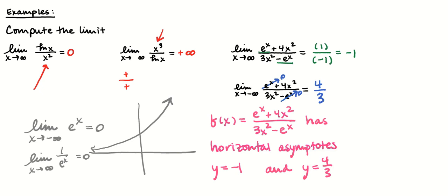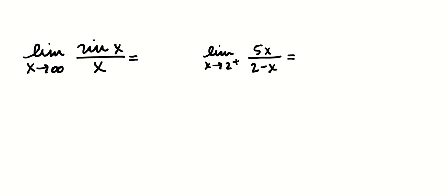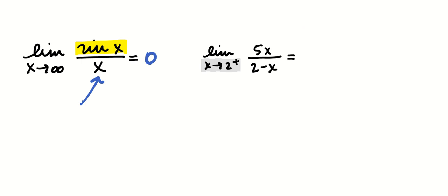Here are two more examples. Sine of x as x goes to infinity — that limit doesn't exist. But compared with x in the denominator, this is definitely bigger on the bottom: x grows, but sine of x is locked between negative 1 and 1. So we have a really big denominator and a relatively small numerator, and that limit comes back 0. The next example has x approaching a finite value, so I try plugging in first. This is going to approach 10 divided by 0.